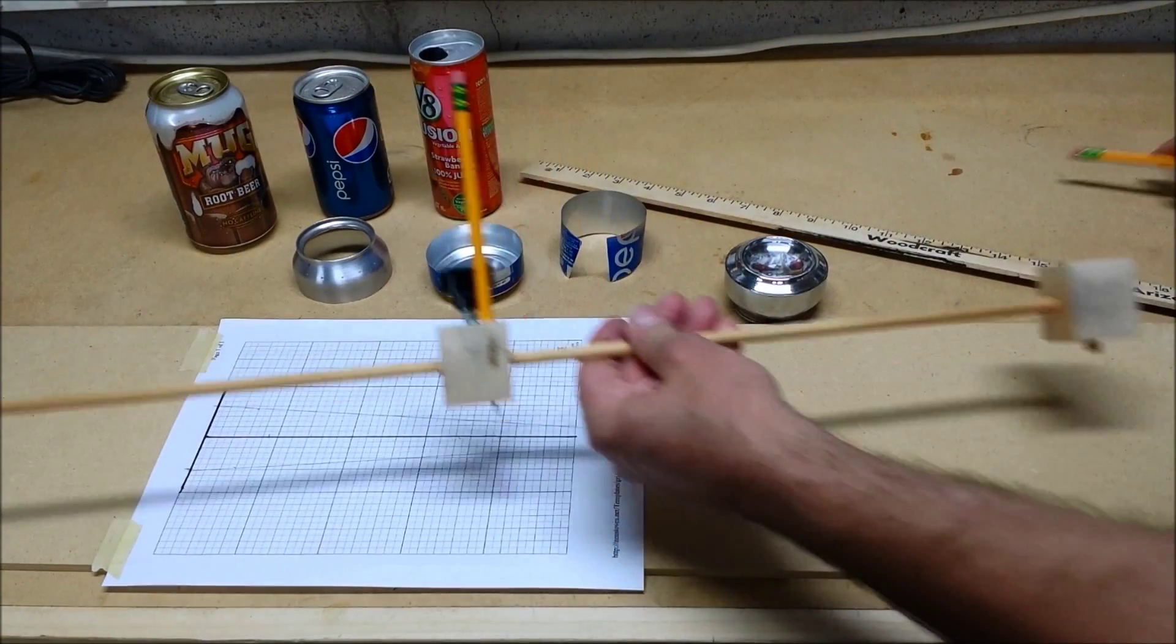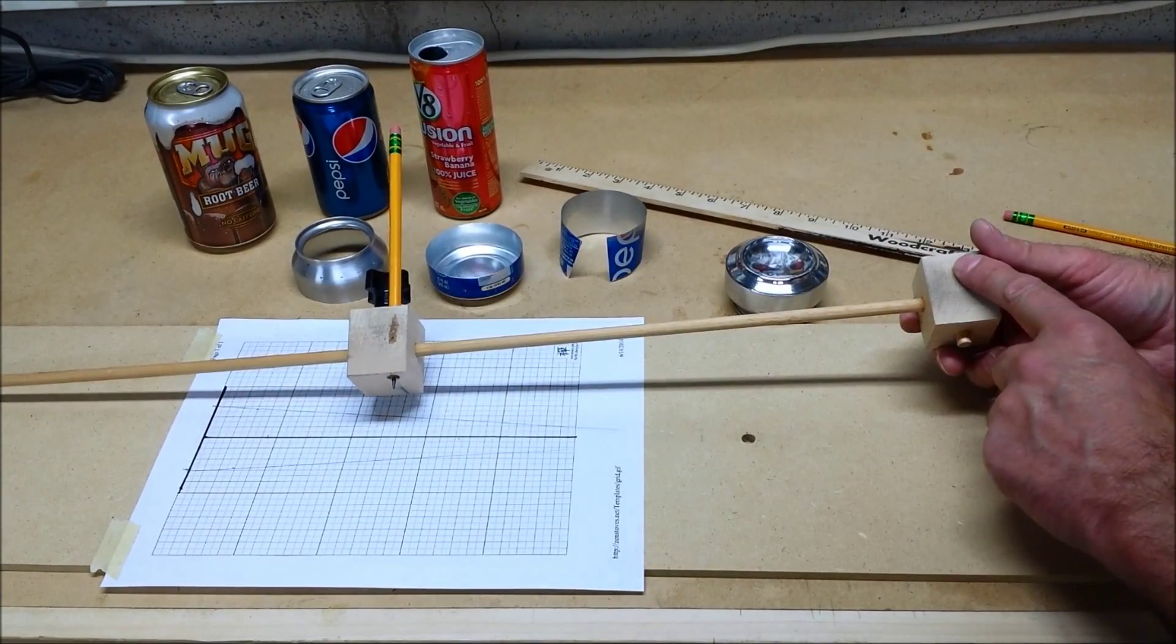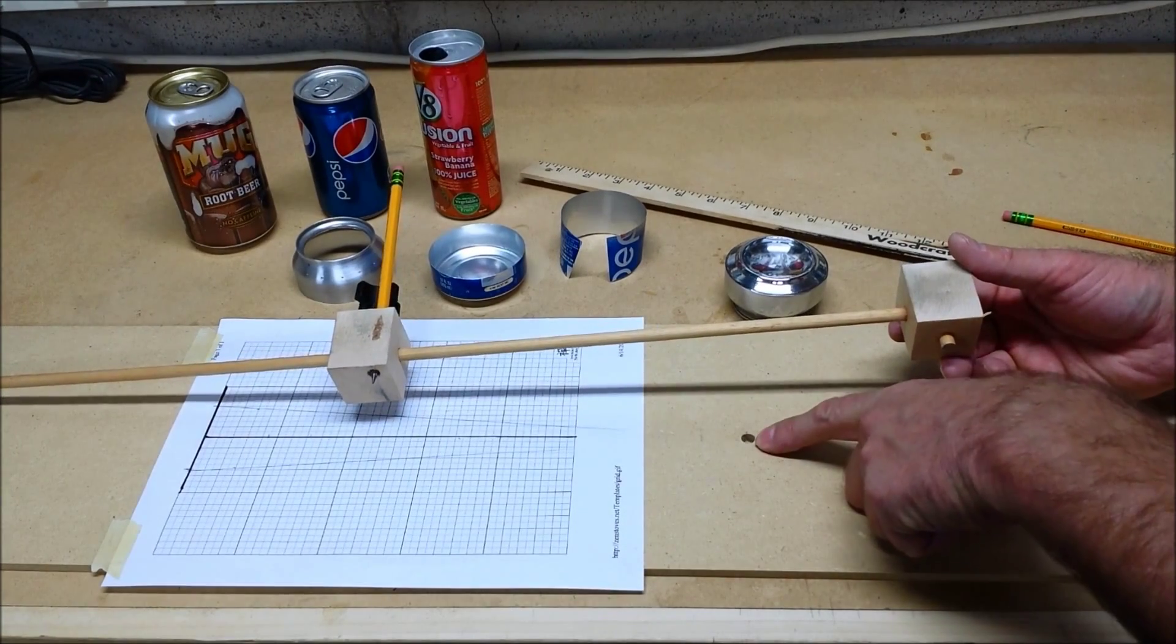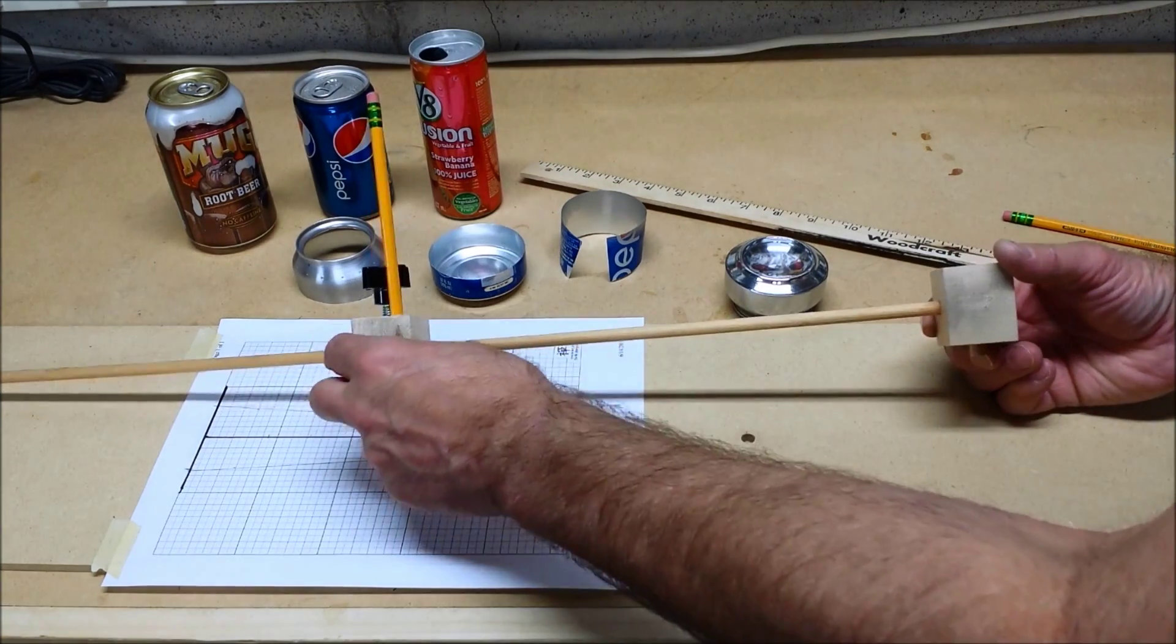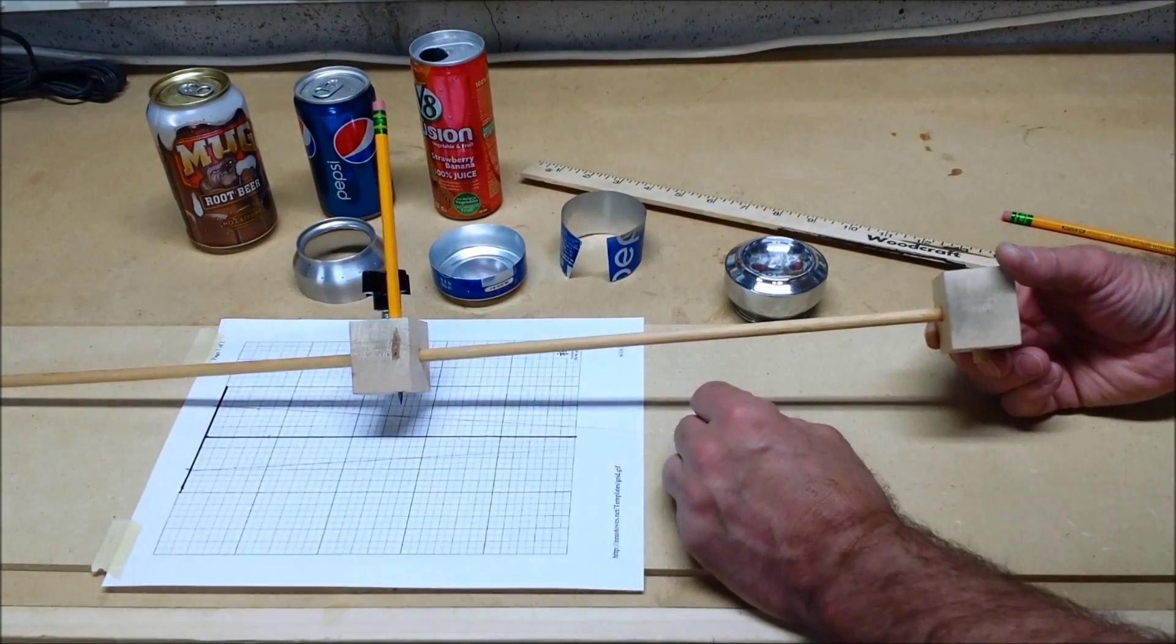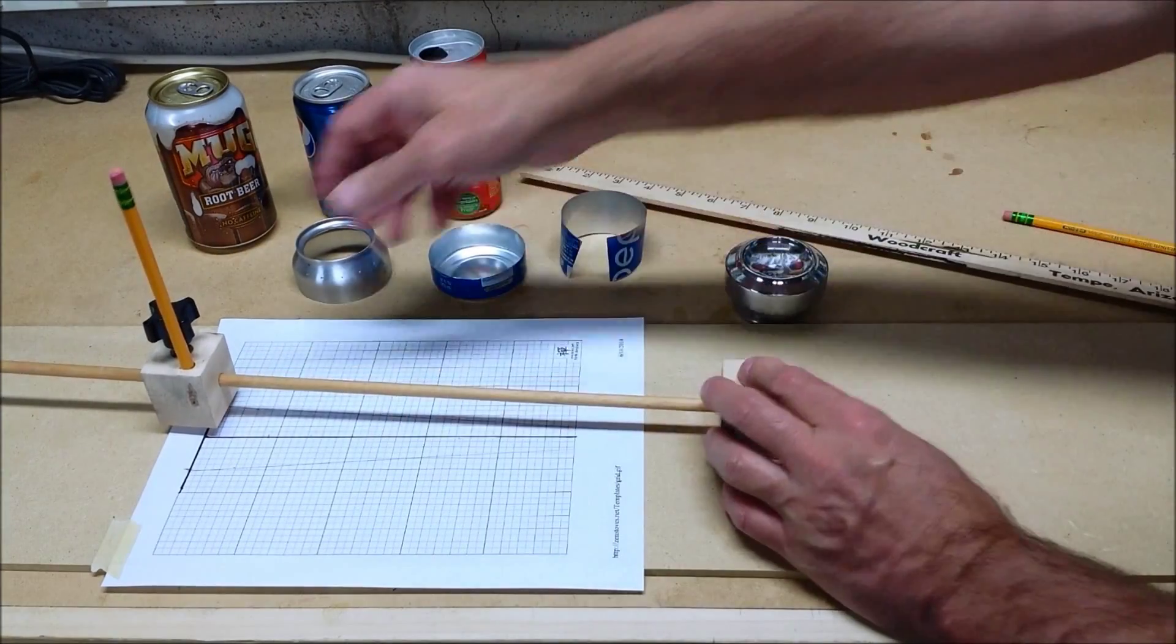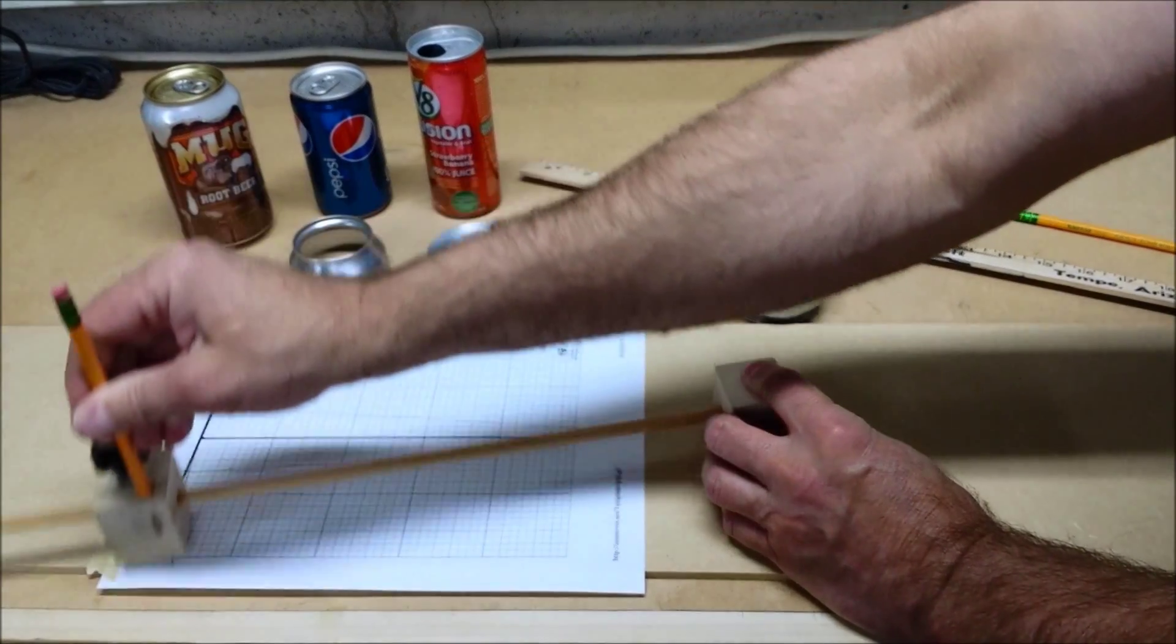I draw a lot of arcs. So I actually have a homemade trammel. Two blocks of wood, a quarter inch dowel. This block is glued to the dowel and has a little nubbin of extra dowel to fit in a hole I drill so it can use that as a pivot point. This block has a hole drilled for a pencil to go through. And it also has a locking knob. So I can set it for the right radius, put that in the pivot point, and then mark my radius, mark my arc.